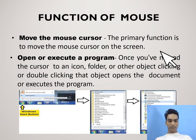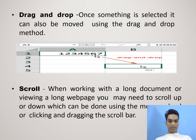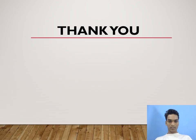Functions of a mouse: move the mouse cursor — the primary function is to move the mouse cursor on the screen. Open or execute a program — once you move the cursor to an icon, folder, or other object, clicking or double-clicking opens the document or executes the program. Drag and drop — once something is selected, it can also be moved using the drag and drop method. Scroll — when working with a long document or viewing a long web page, you may need to scroll up or down, which can be done using the scroll wheel or by clicking and dragging the scroll bar. Thank you.